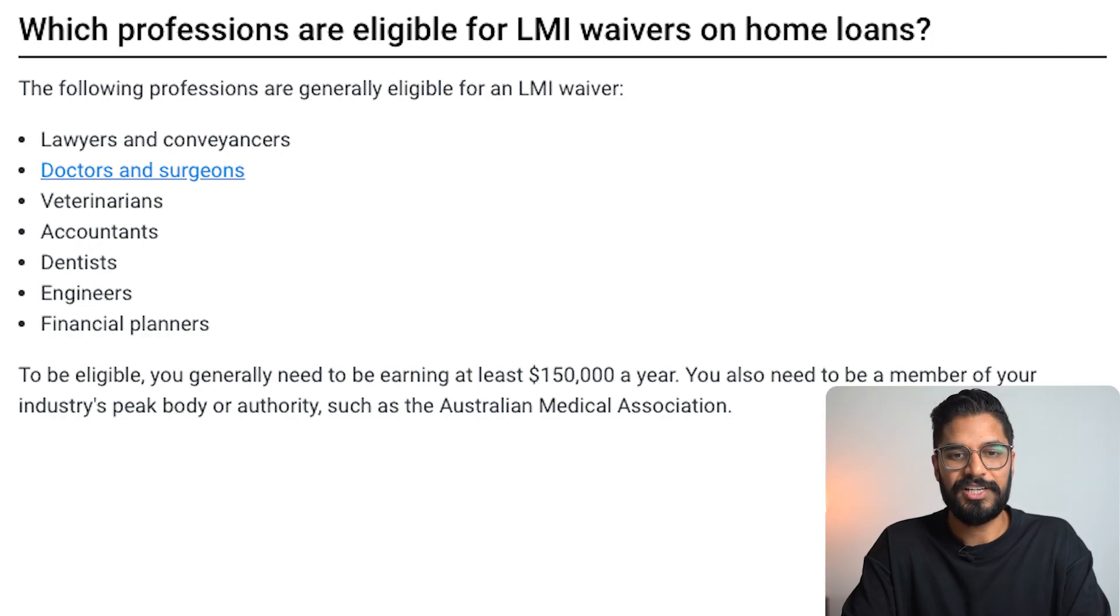So the following professions are generally eligible for an LMI waiver and that would be lawyers, conveyancers, doctors, surgeons, veterinarians, accountants, dentists, engineers, financial planners. To be eligible, you generally need to be earning at least $150,000 a year. Again, there's flexibility around this, so you should definitely consult with a broker. You also need to be a member of your industry's peak body or authority, such as the Australian Medical Association.